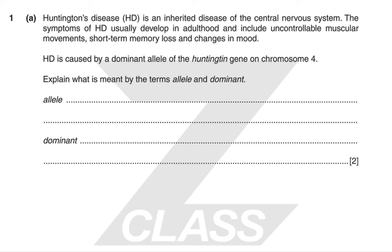A nice easy question to ease you into this paper. So an allele is an alternative form of a gene — a variation of a gene that is found in the same place on the chromosome. And then a dominant allele is always expressed in the phenotype when it's present. Nice, two easy questions.